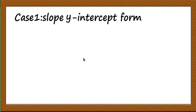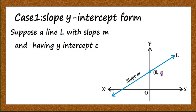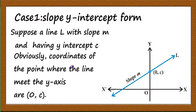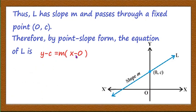Now let us derive the equation of the line in the slope y-intercept form. Suppose a line L has slope m and y-intercept c. The y-intercept is c means the coordinate of the point where the line meets the y-axis is (0, c). Using the point-slope form: y - c = m(x - 0), which gives y = mx + c. This is the equation of the line having slope m and y-intercept c.